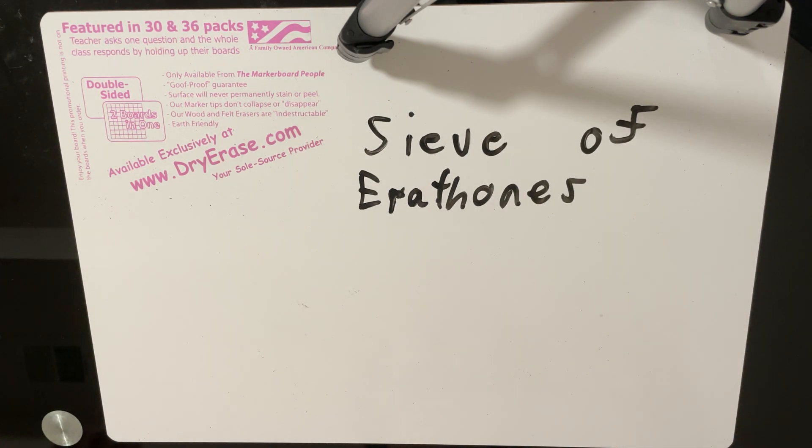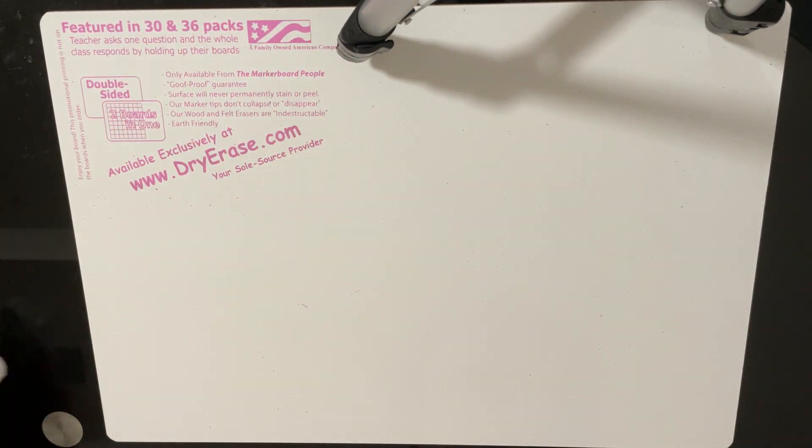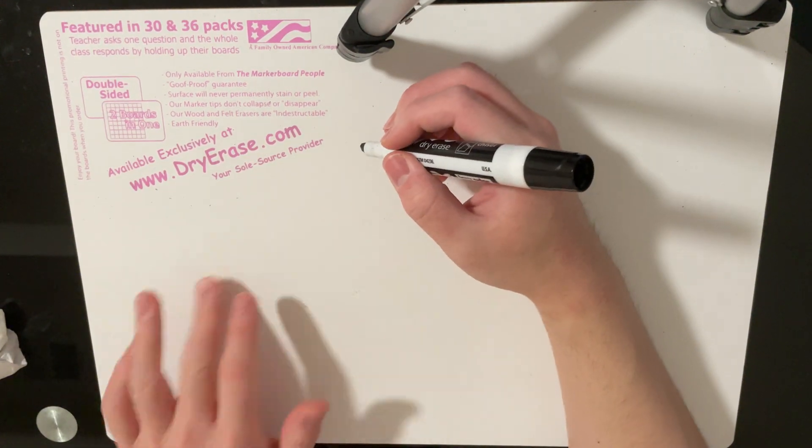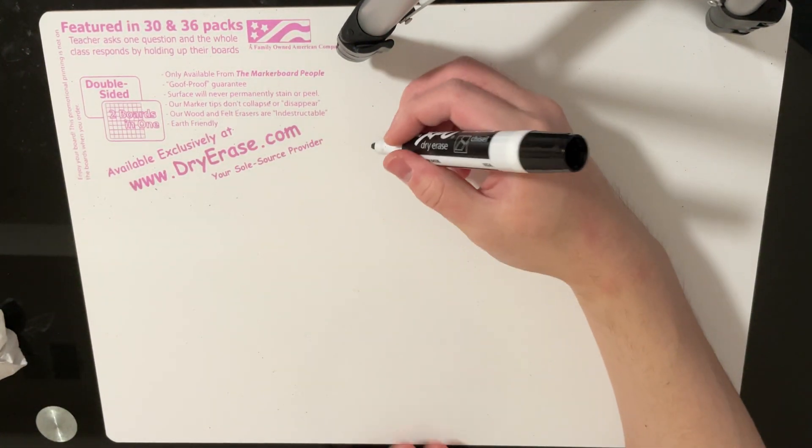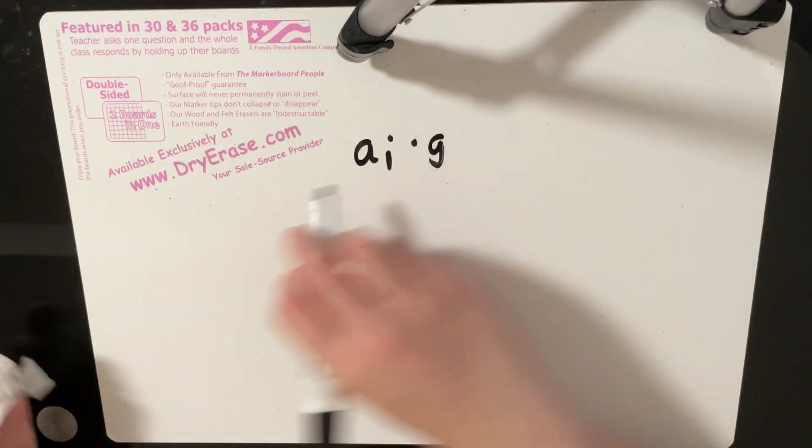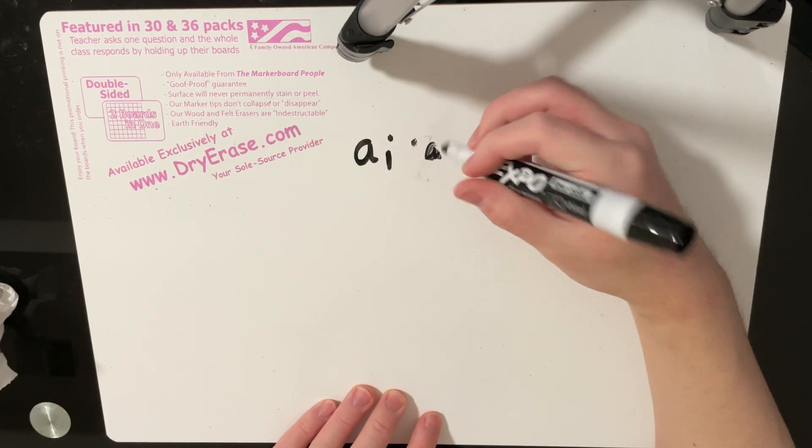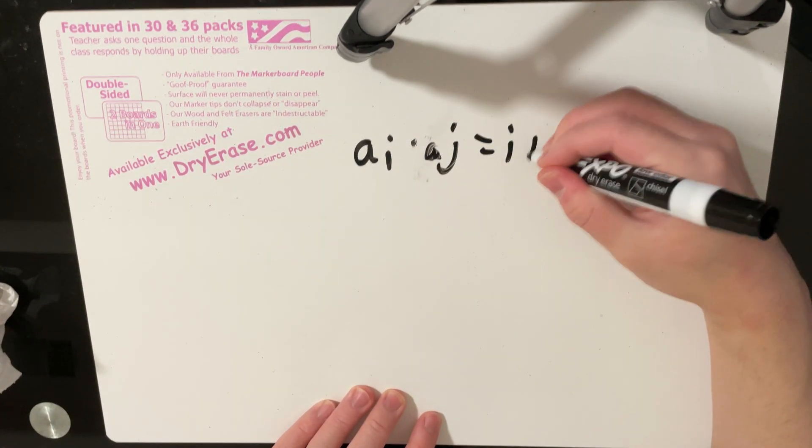But basically you want to use this idea to process how many pairs exist. So why is this helpful? Well, the n squared naive algorithm doesn't really account for the properties of this equation over here. Why do I keep on writing j? That doesn't make any sense. The ai times aj is equal to i plus j.